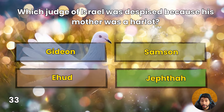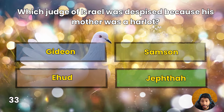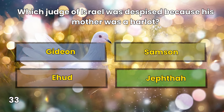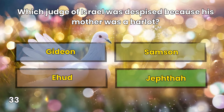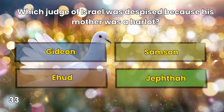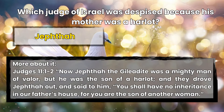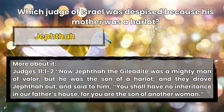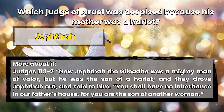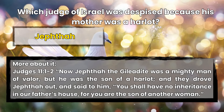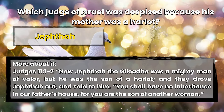Question 33: Which judge of Israel was despised because his mother was a harlot? Gideon, Samson, Ehud, or Jephthah? Jephthah. Judges 11:1-2 — Now Jephthah the Gileadite was a mighty man of valor, but he was the son of a harlot. And they drove Jephthah out and said to him, 'You shall have no inheritance in your father's house, for you are the son of another woman.'